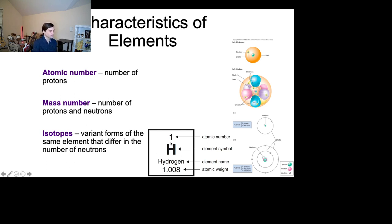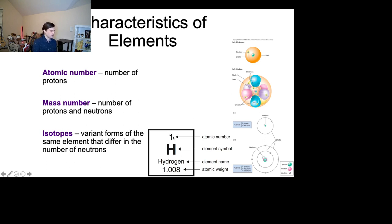The atomic number tells you the number of protons and also the number of electrons. The mass number, also called the atomic weight, is the added-up number of protons and neutrons found inside the atom. In the case of hydrogen, it doesn't have any neutrons on average, so it's just a proton floating around with one singular electron — so the atomic weight would be one. In the case of helium, it has two protons and one neutron, so the atomic weight would be three.